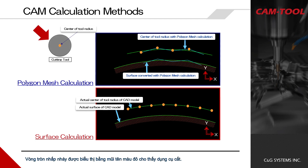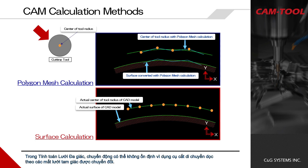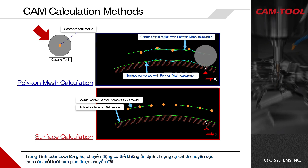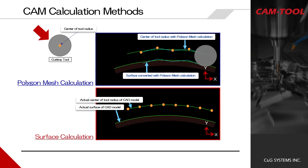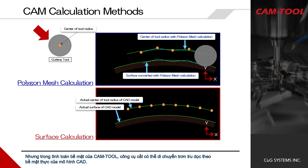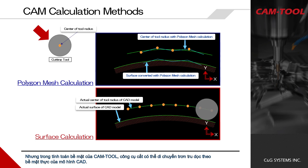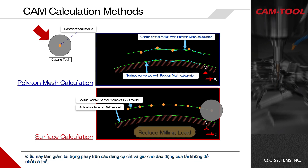You can see the difference in cutting tool motion. The flashing circle indicated by the red arrow shows the cutting tool. In polygon mesh calculation, the motion can be unstable because the cutting tool moves along the converted triangular meshes. But in CamTool's surface calculation, the cutting tool can move smoothly along the actual surface of the CAD model. This reduces the milling load on the cutting tools and keeps load fluctuations as constant as possible.